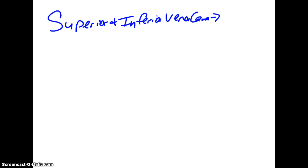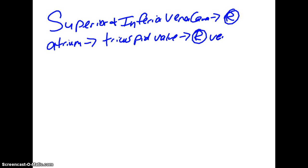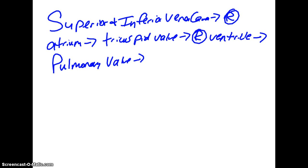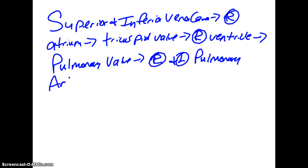From there the blood goes to the right atrium. From the right atrium it travels through the tricuspid valve and into the right ventricle. From the right ventricle it goes through the pulmonary valve into the right and left pulmonary arteries. The pulmonary arteries are the arteries of the lungs. When it gets to the lungs, that's when blood becomes re-oxygenated. I'm changing the color to red to symbolize it is now oxygenated blood.